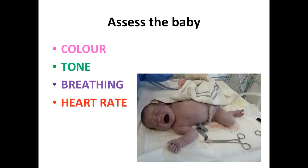Looking at this picture, the baby is pink, the tone is good — they look a little bit wriggly — they're clearly screaming so they're breathing, and the heart rate in this baby was well over 100. Everything in this baby is good, so you would dry and wrap the baby and give the baby to the mother.